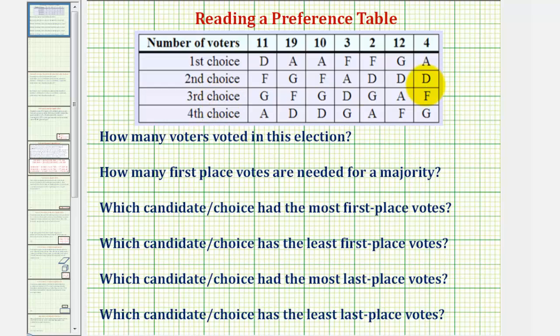Looking at the choices, notice how the candidates are A, D, F, and G.